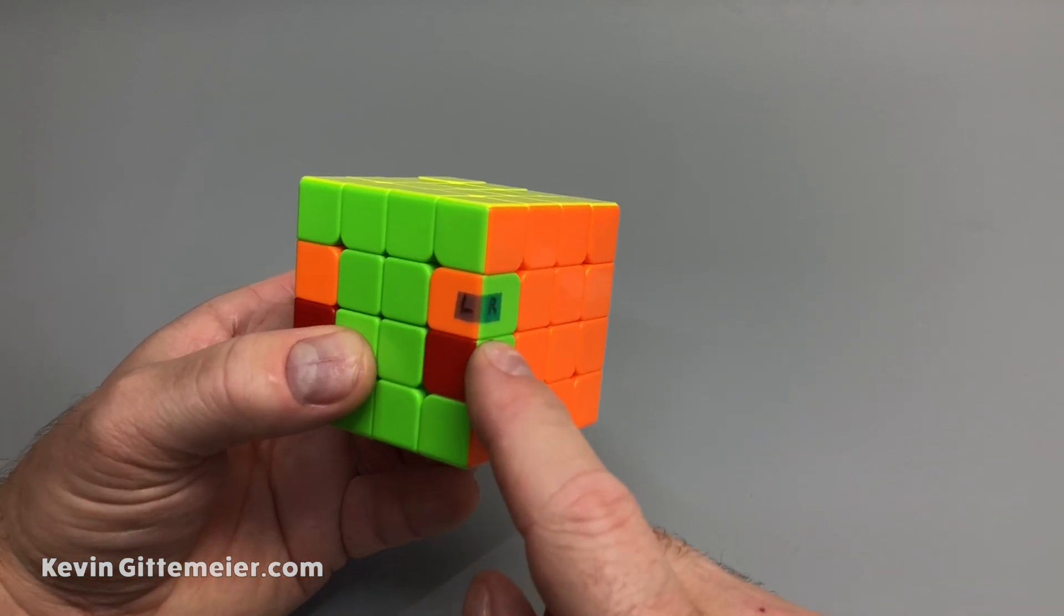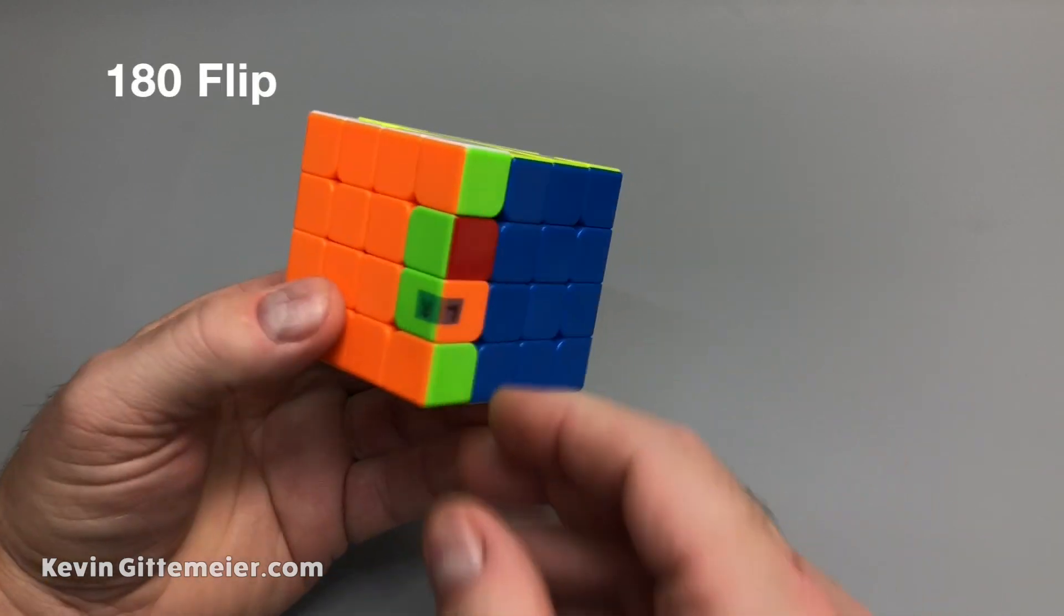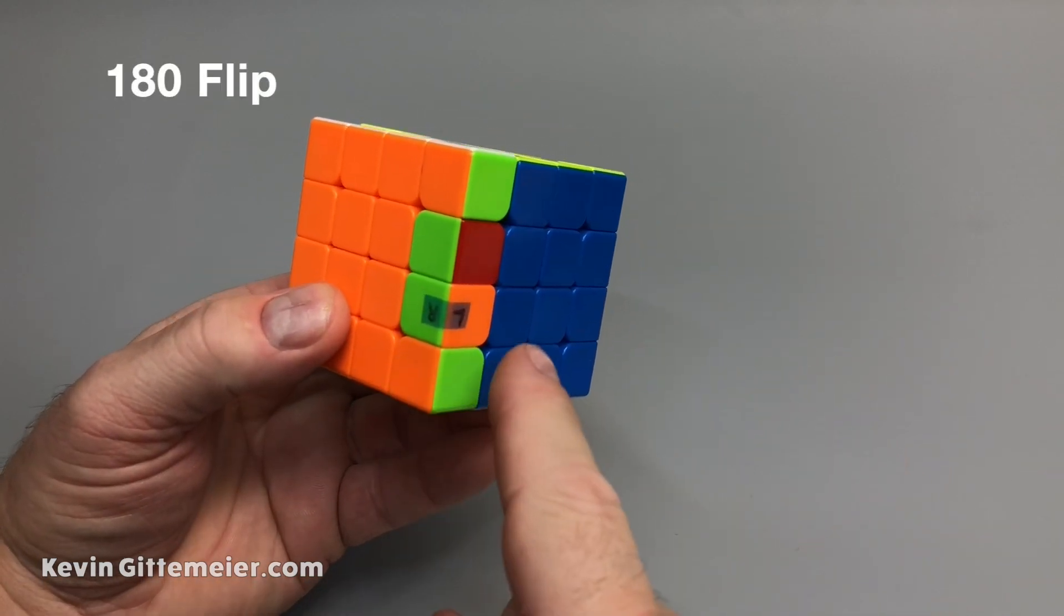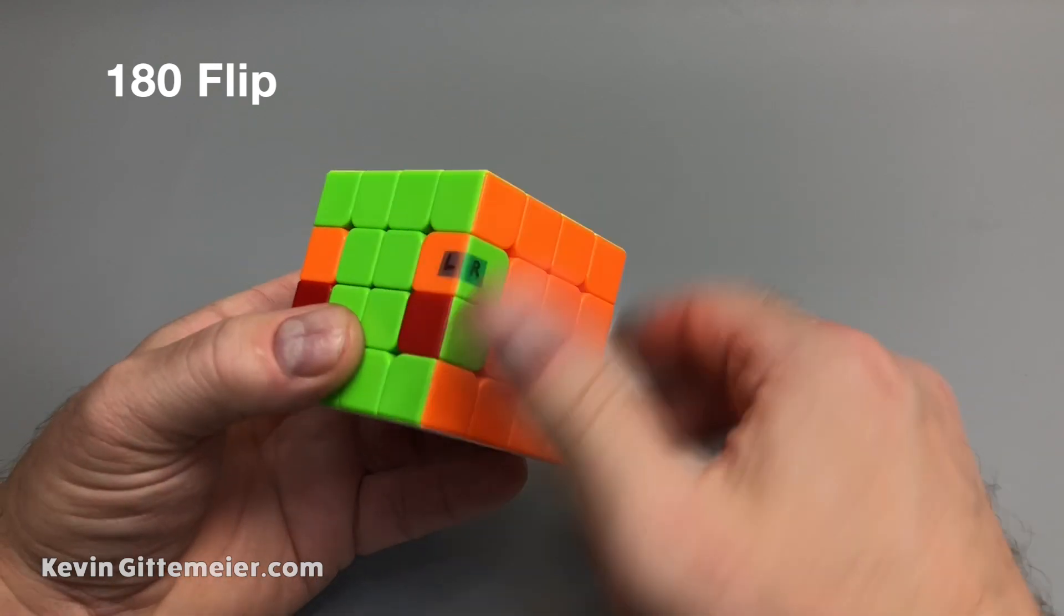The easiest method to flip these is simply to turn aside. So notice when I did that, not only did the color swap, but top and bottom swapped. So let's look at that again.